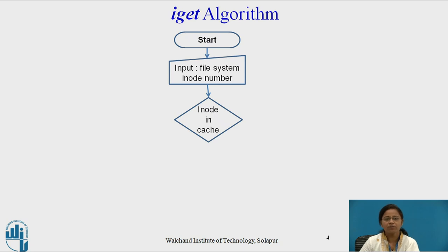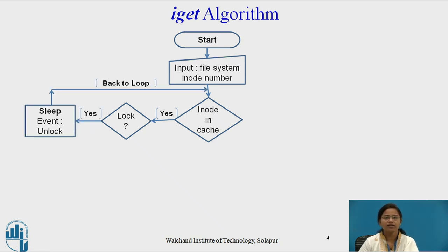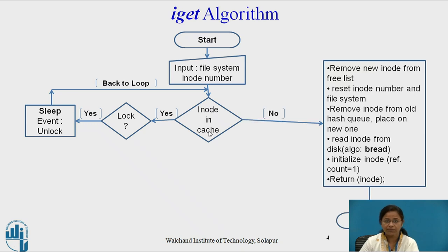Whenever an i-node number is given to the algorithm, it has to check whether that i-node is present in cache. If it is present in the cache, then check whether that i-node is locked — meaning whether it is being used by some other process. If it is used by some other process, then the process which wishes to access that i-node must sleep for the event that the i-node becomes unlocked, and it will enter back into the while loop.